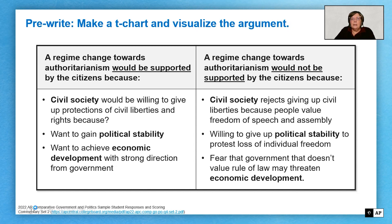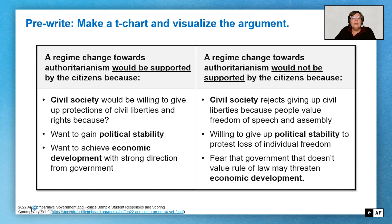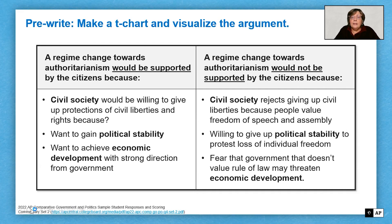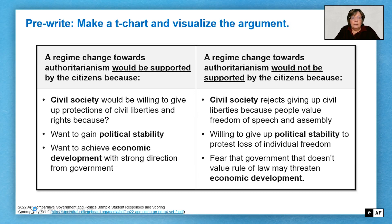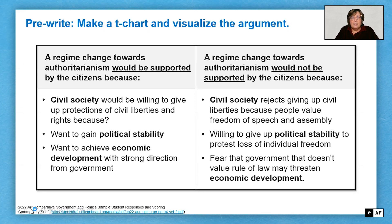Now let's look at the second argument. A regime change towards authoritarianism would not be supported by citizens because civil society rejects giving up its civil liberties — its freedom of speech and assembly. They might be willing to give up political stability to protest their loss of individual freedom. And finally, the fear that the government doesn't value rule of law, because authoritarian regimes operate more by rule by law, may threaten economic development by not protecting private property or the rights of entrepreneurs to start businesses. This T-chart is designed to help you do the two things I'm looking for as a reader: a claim and specifically a line of reasoning.